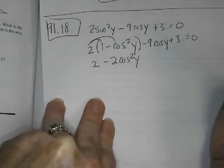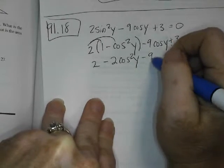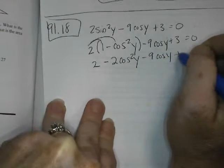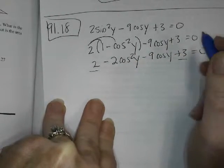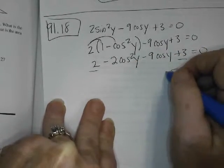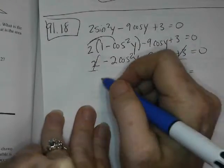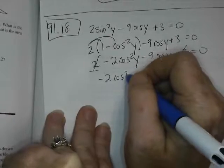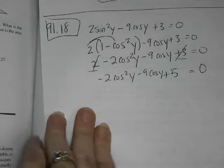And I keep saying cosine squared x, okay, so don't let me mess this up though, 9 cosine y plus 3. So the 2 and the 3 can give me a 5, but then I have negative 2 cosine squared y minus 9 cosine y plus 5 equals 0.